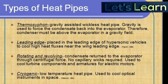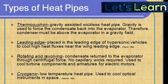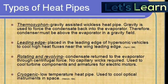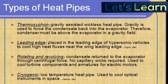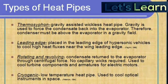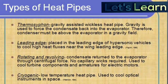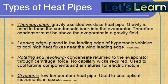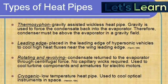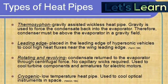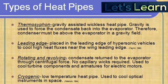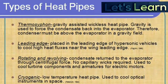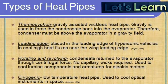Now let's see the types of heat pipes in various applications. The first is the thermosyphon, a gravity-assisted wickless heat pipe where gravity is used to force the condensate back into the evaporator. Second is the leading edge heat pipe, placed in the leading edge of hypersonic vehicles to cool high heat fluxes near the wing leading edge. Third is the rotating and revolving heat pipe, where condensate is returned to the evaporator section through centrifugal force. The last one is the cryogenic low-temperature heat pipe, used to cool optical instruments in space.